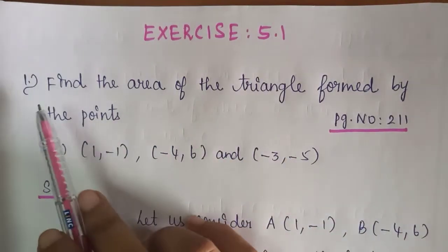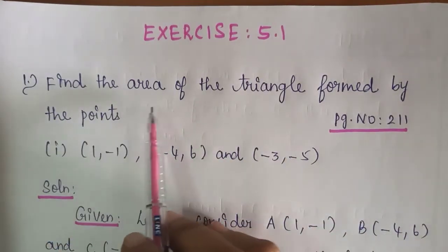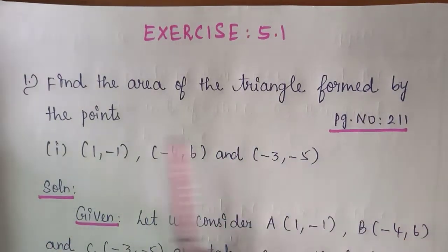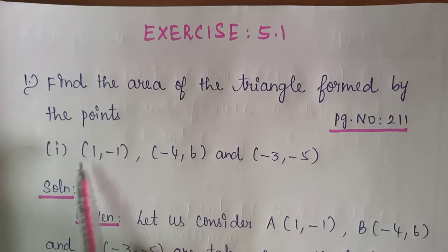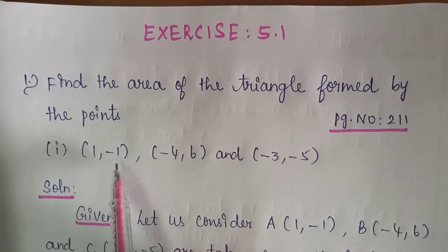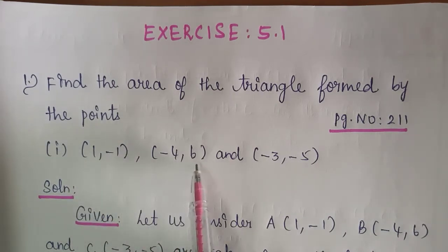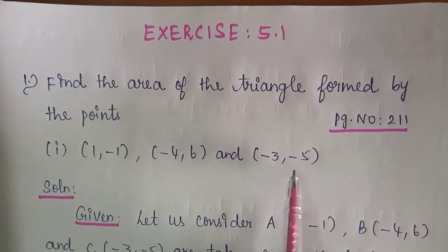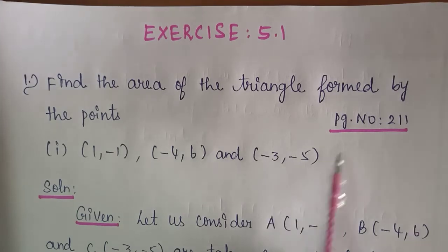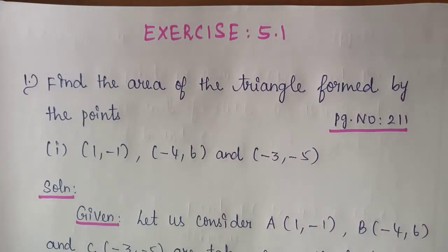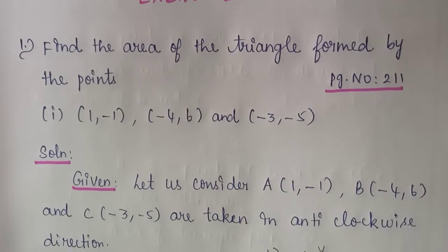Exercise 5.1, first question. Find the area of a triangle formed by the points: first subdivision — (1, -1), (-4, 6), and (-3, -5), which belongs to page number 211.